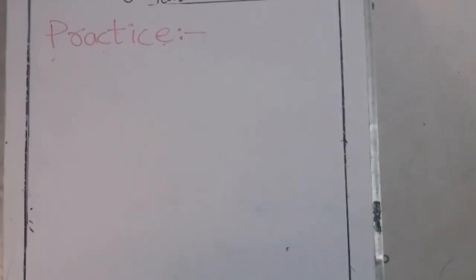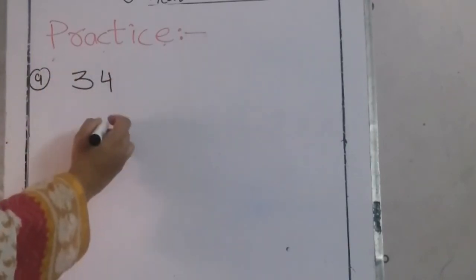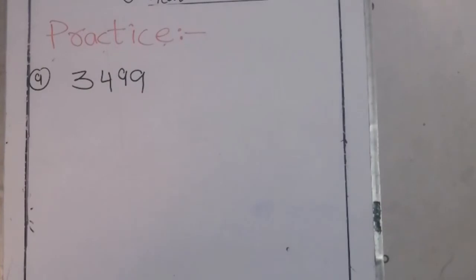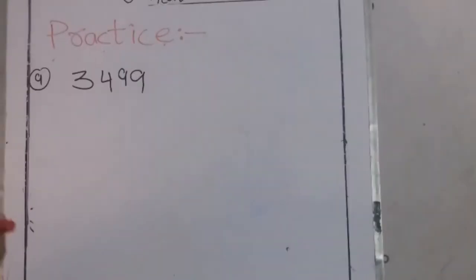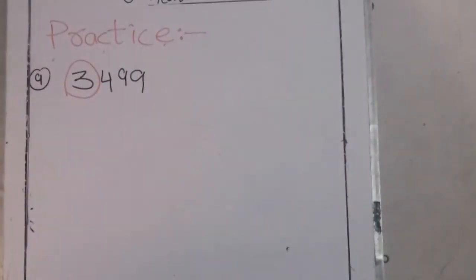We have some questions from our practice page. Let me have Part A: 3,499. We are going to round off this number to the nearest 1000. First of all, we circle the digit at the 1000 place and underline the digit at the 100 place — in other words, next to the circled digit.